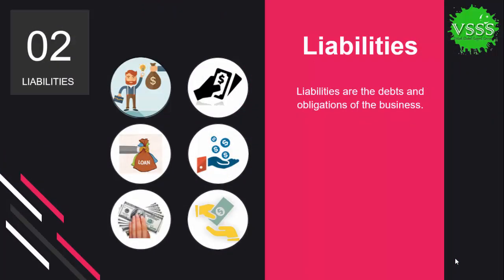The second topic covered in today's session is liabilities. Liabilities are the debts and obligations of the business, arising from external sources like banks or other financial institutions. Liabilities also have two subcategories: the first is current liabilities and the second is long-term liabilities. Current liabilities are those which must be paid within one year.